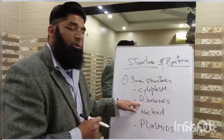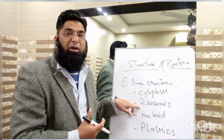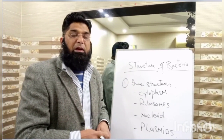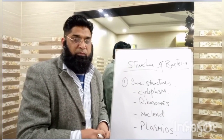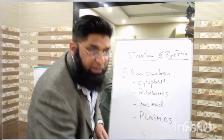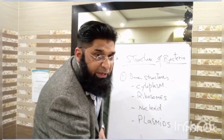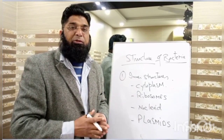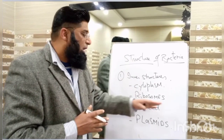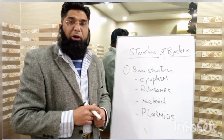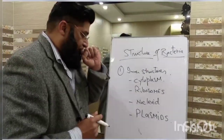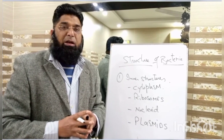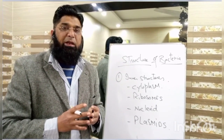Regarding ribosomes, one special point to note: books simply state that bacterial ribosomes are 70S in nature. Bacterial cells contain 70S ribosomes. Here, 70S refers to the sedimentation rate or sedimentation velocity of the ribosomes, and 'S' stands for the Svedberg unit.